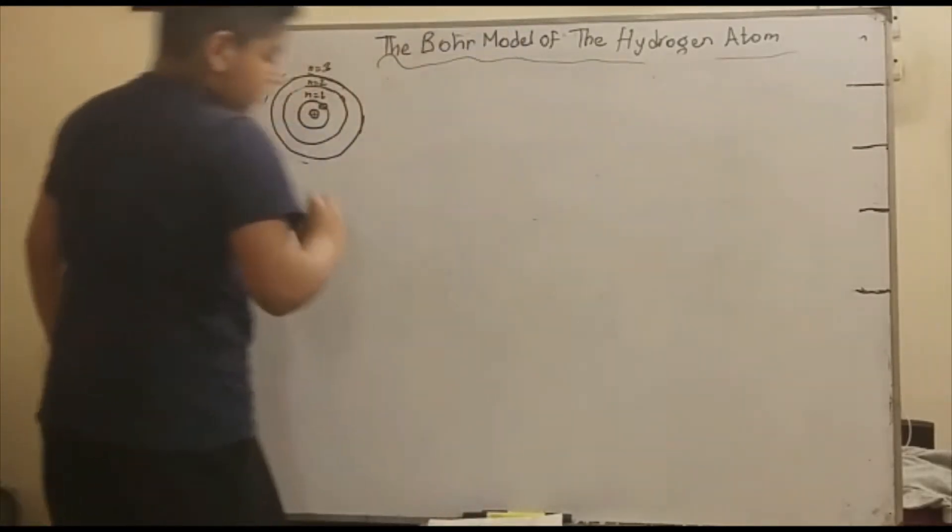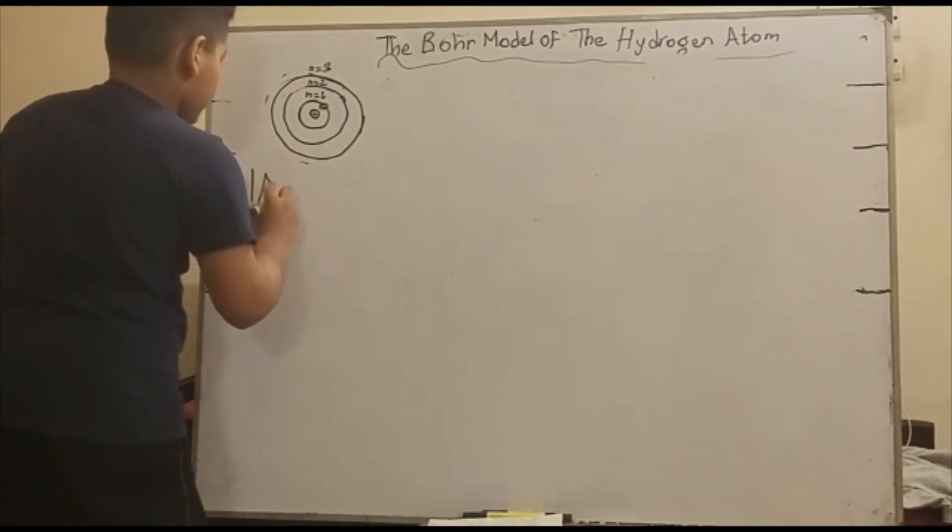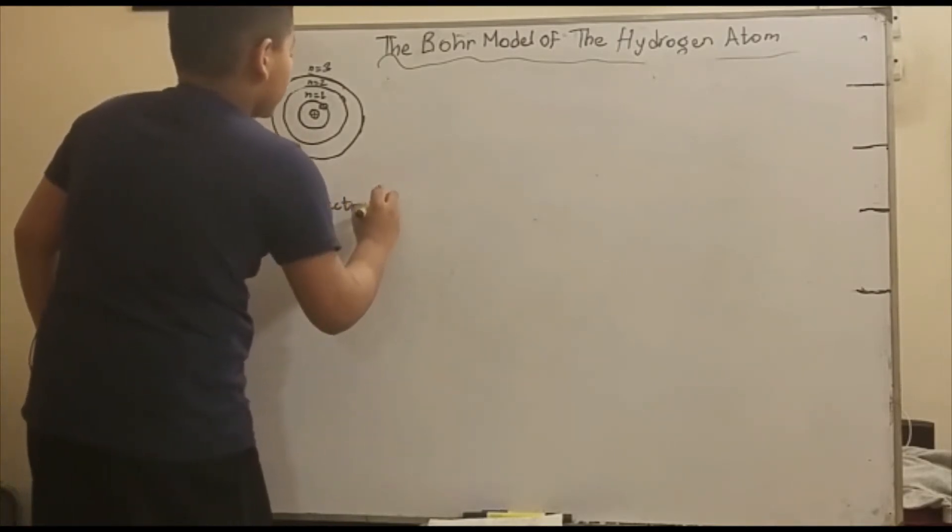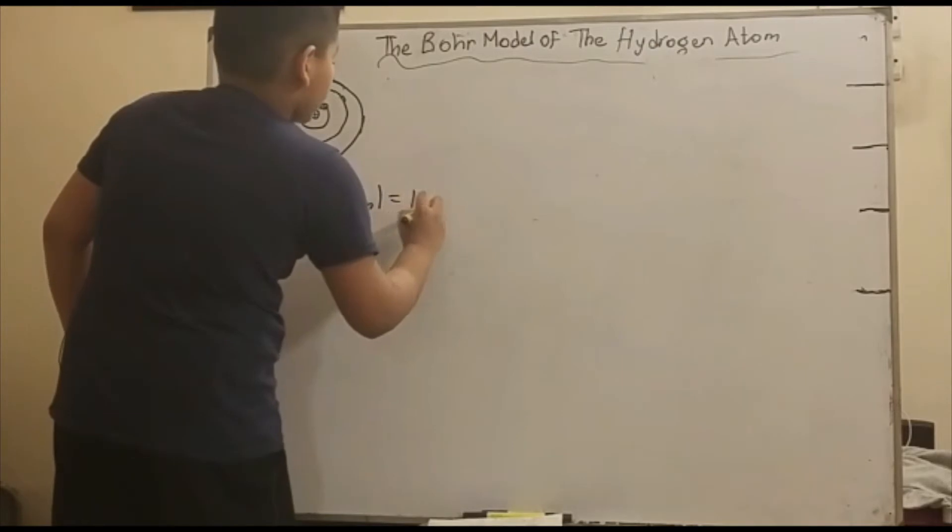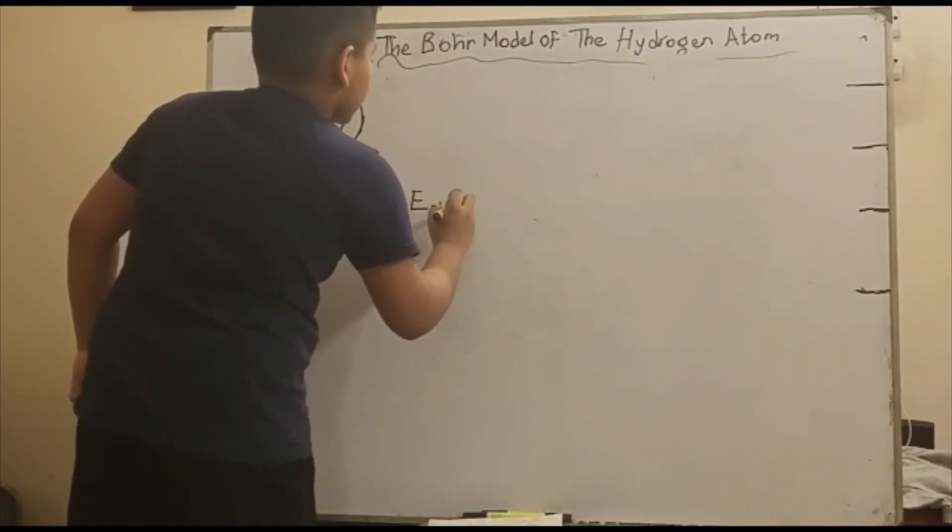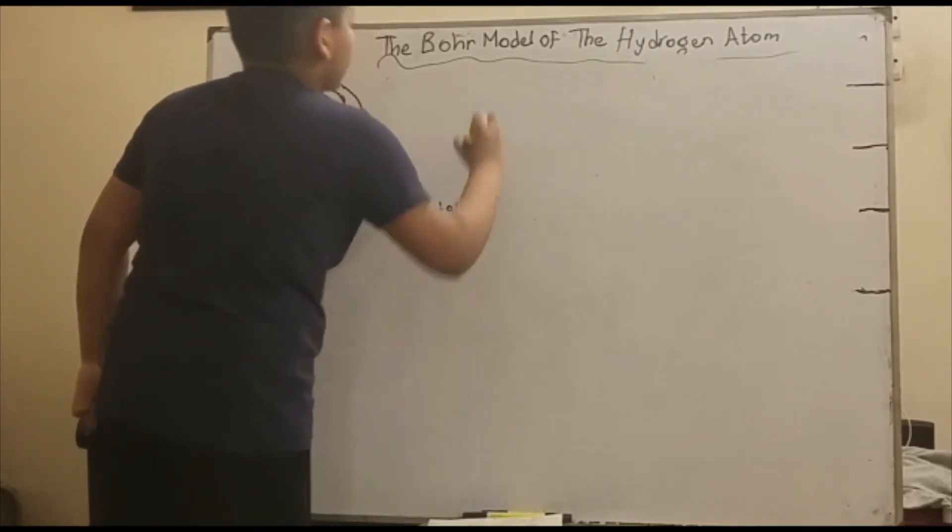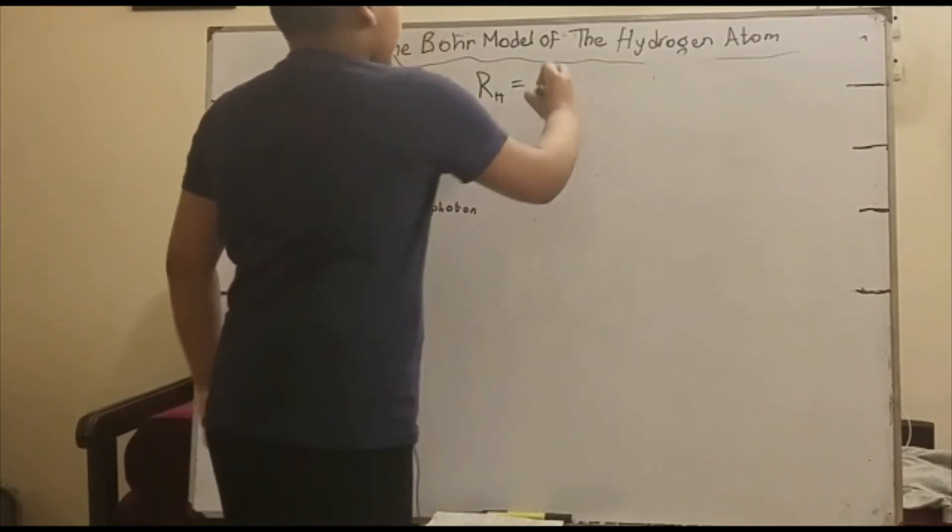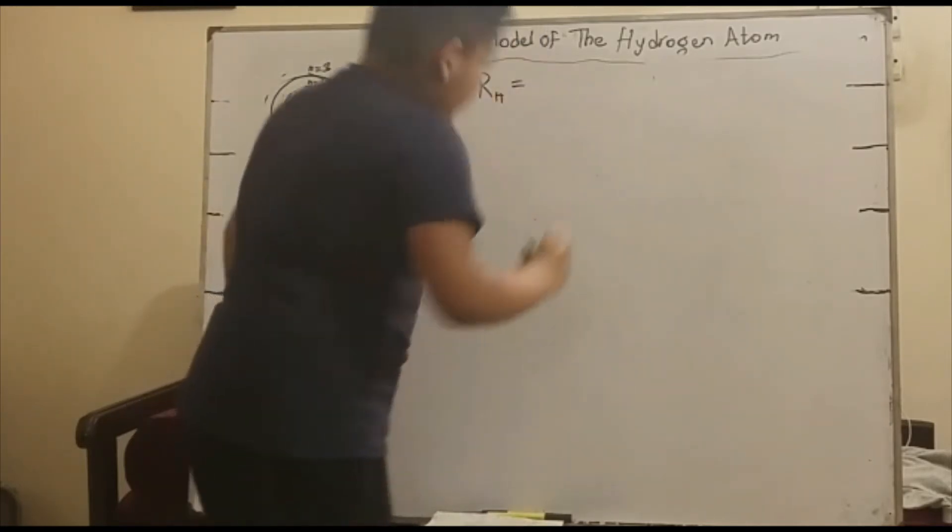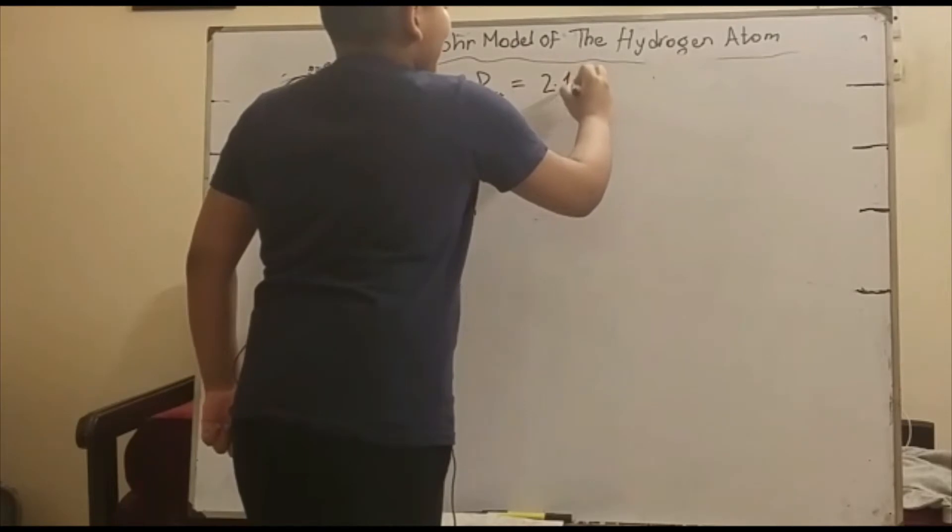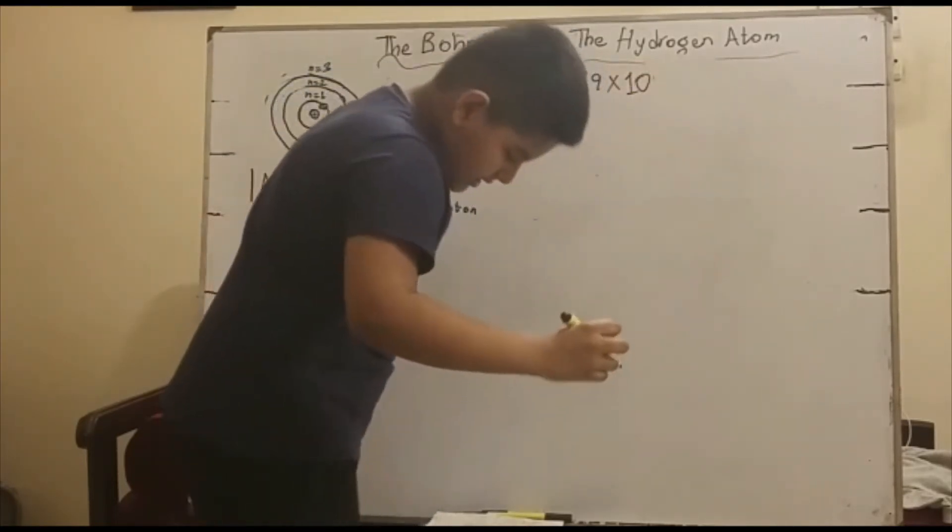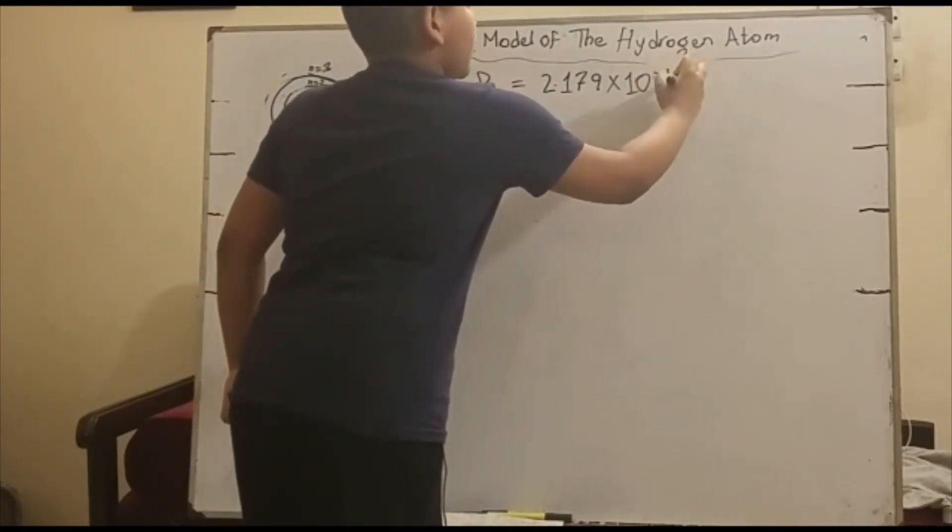So we can say this equation: the absolute value of the change in energy of the electron will be the energy of the photon. The energy of the photon depends on the Rydberg constant, or RH, which is equal to 2.179 times 10 to the negative 18 joules.